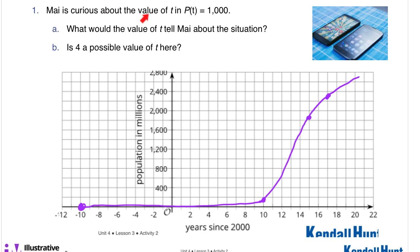Now we have May. She's curious about the value of t, and p of t equals 1,000. So what this is saying is, in how many years after the year 2000 did 1,000 million or a billion people own a cell phone? And so I'm looking at my graph as to where we hit 1,000, and that would be here. And mine looks like it's at almost 13 years. So t here would be like 12.8 maybe.